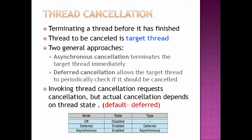Next problem is Thread Cancellation. The main point of thread cancellation is to terminate a thread before it is finished. What we can cancel is called the target thread. There are 2 different approaches. First is asynchronous cancellation — the target thread is immediately closed. So when I cancel the thread, it is immediately closed.